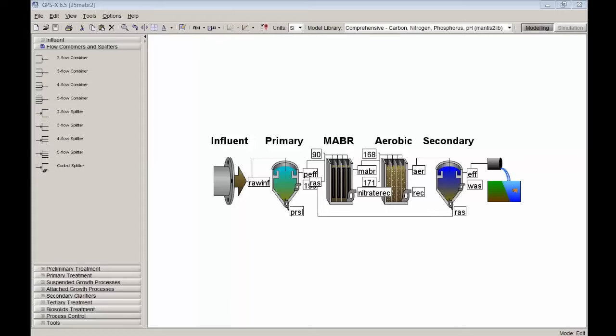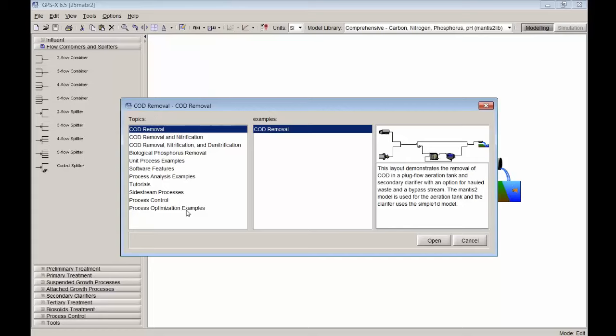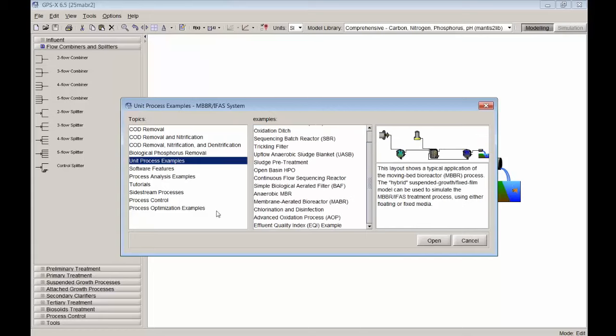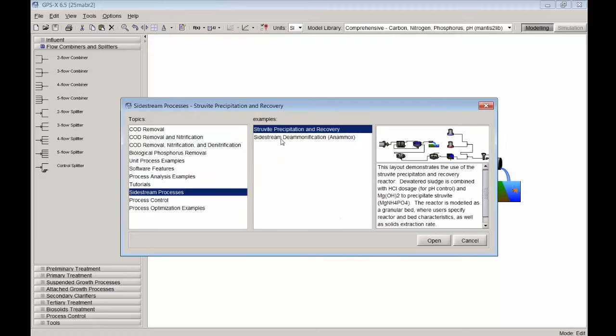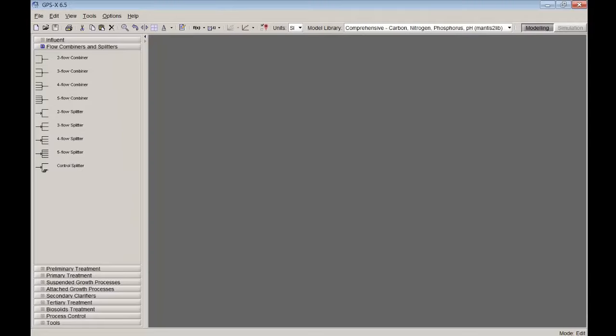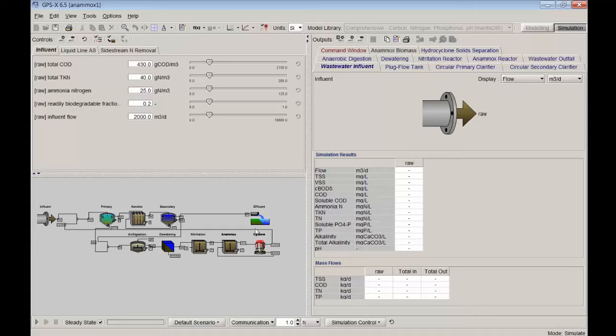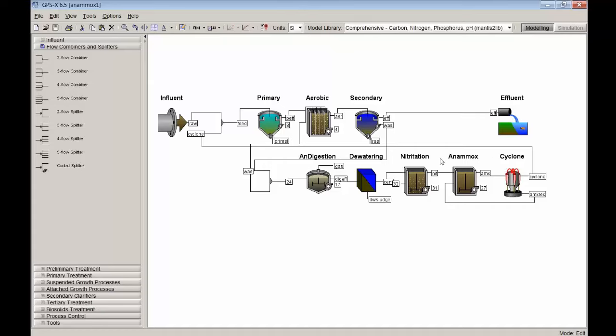So very quickly, I will show you what that looks like. Under the sidestream processes, under the sidestream here, sidestream deammonification, the Anammox process, you can open up that layout where we already have a nice layout put together that incorporates that hydrocyclone there. In this particular case, after digestion, we can see we'll have a very large ammonia and phosphorus load coming down this way. We can then pass it through a nitritation tank, which allows to convert some of that ammonia to nitrite, and then an Anammox tank to be able to take the combination of ammonia and nitrite together and convert that to nitrogen gas. That's what this sidestream deammonification process is all about. And so to do that, we want to preserve that Anammox, keep that biomass there, and so we're going to use this hydrocyclone to recycle that back.